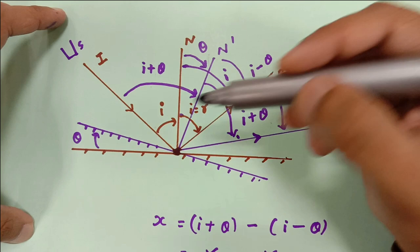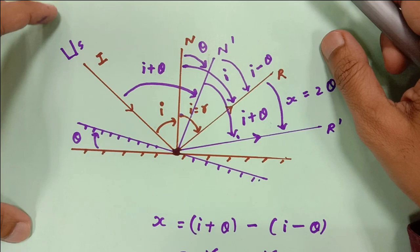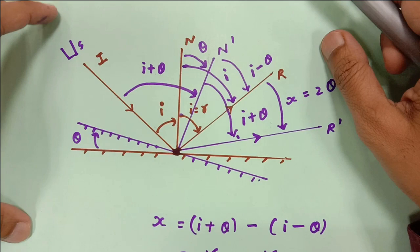So the reflected ray turns by 2 theta if you turn the mirror by theta. This is a very important relation.